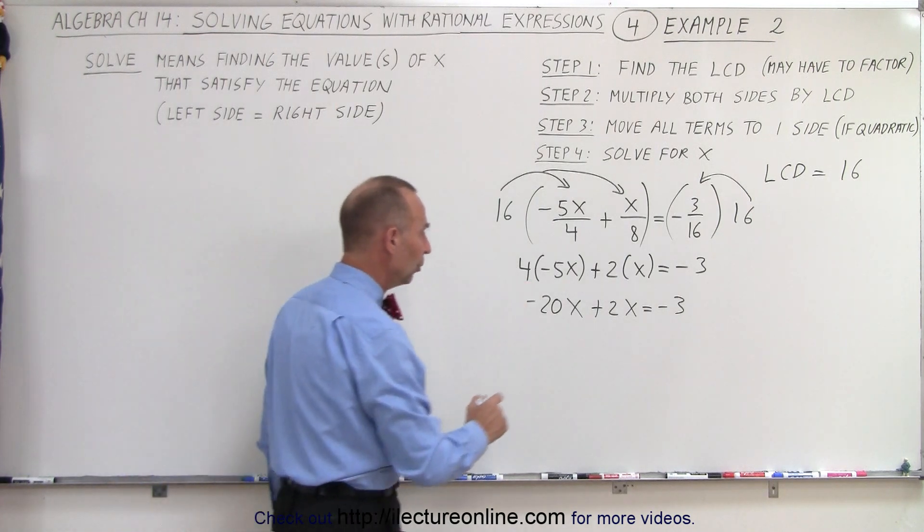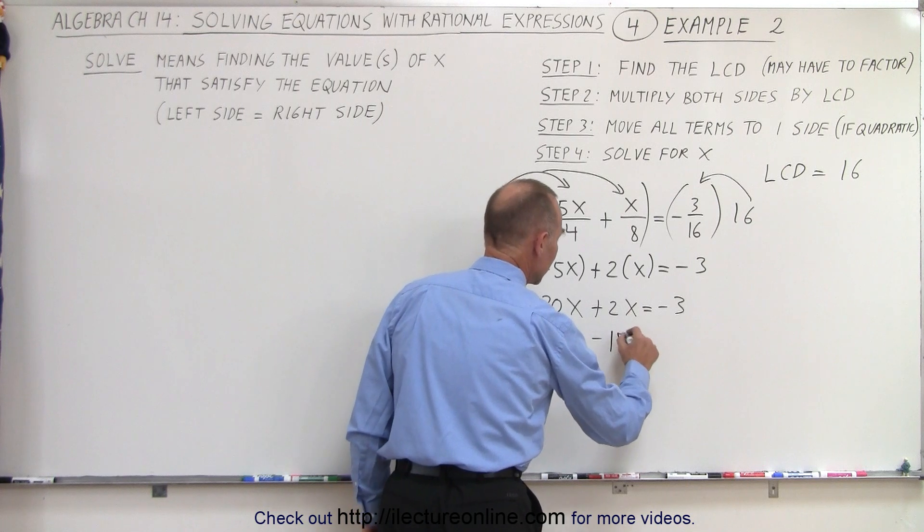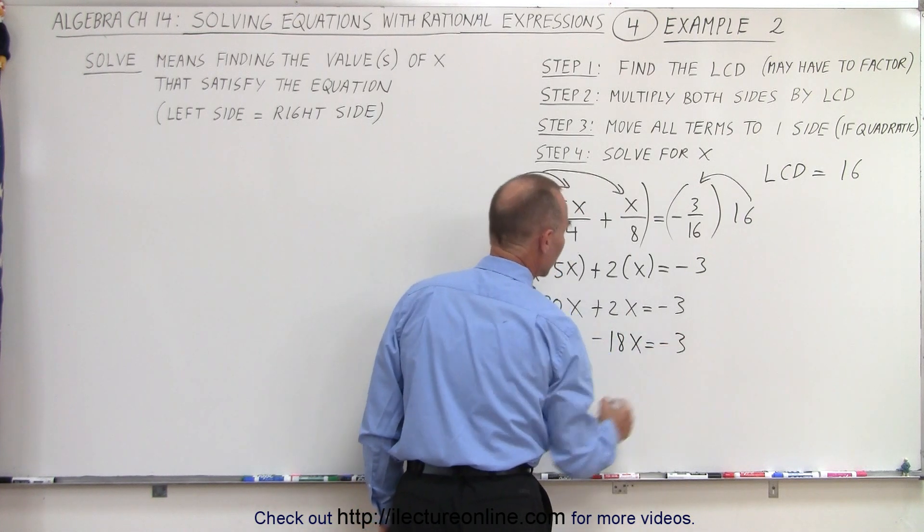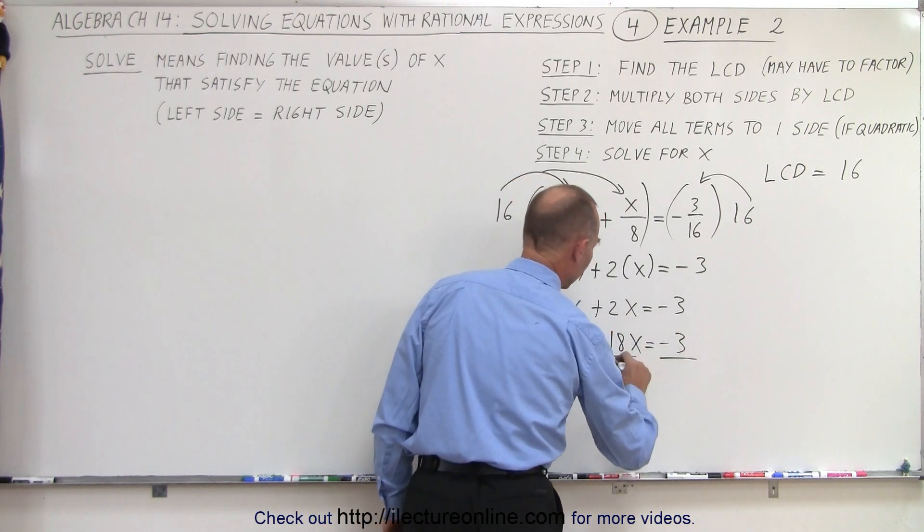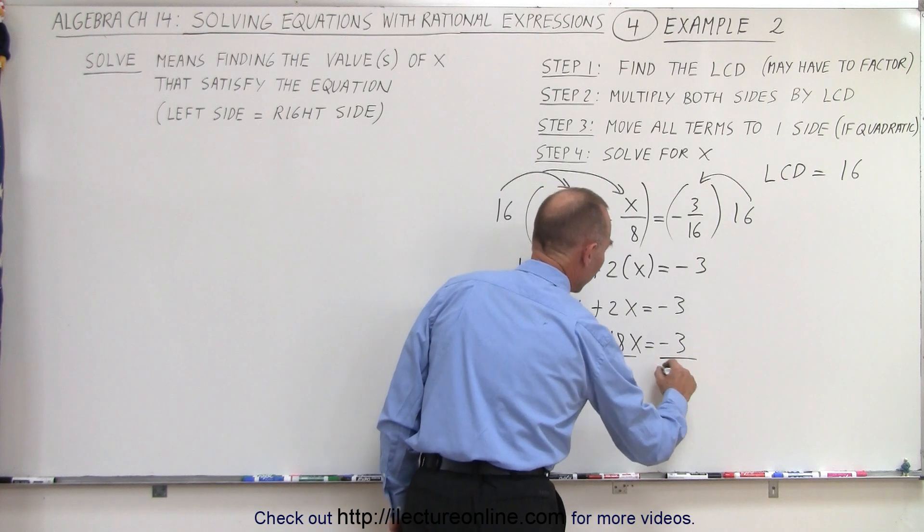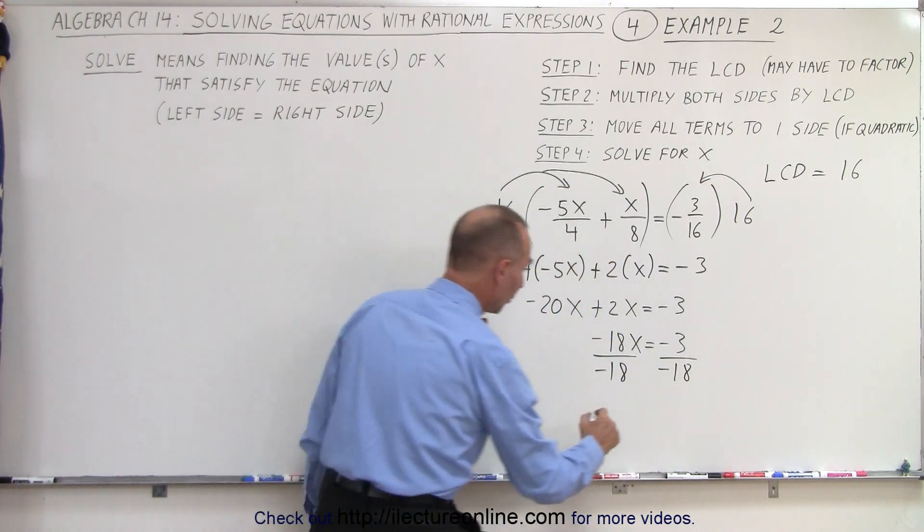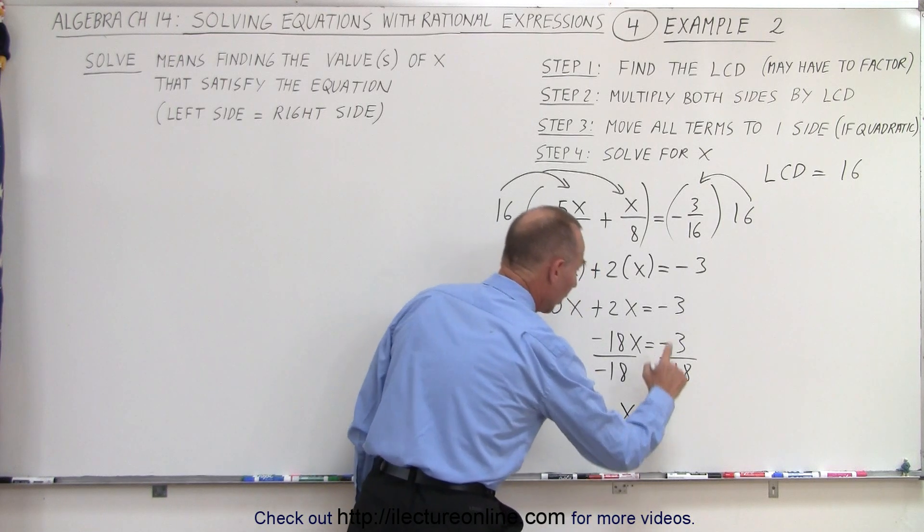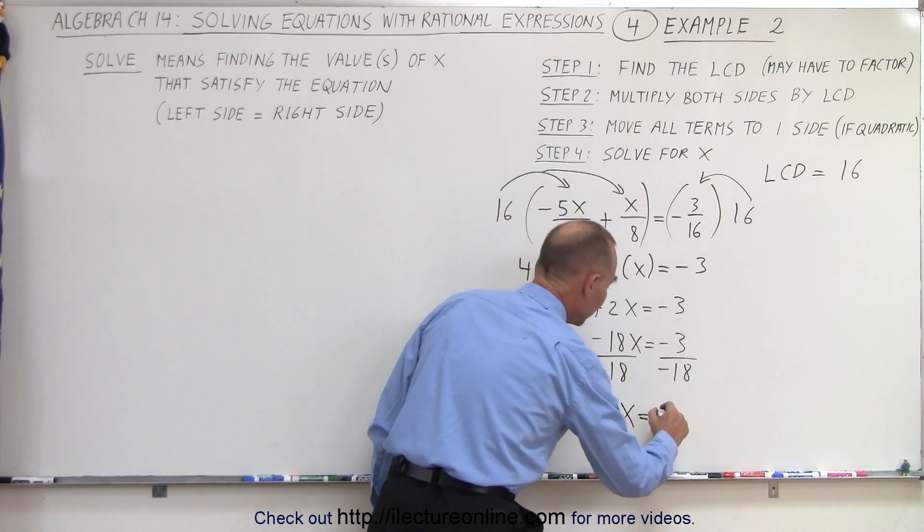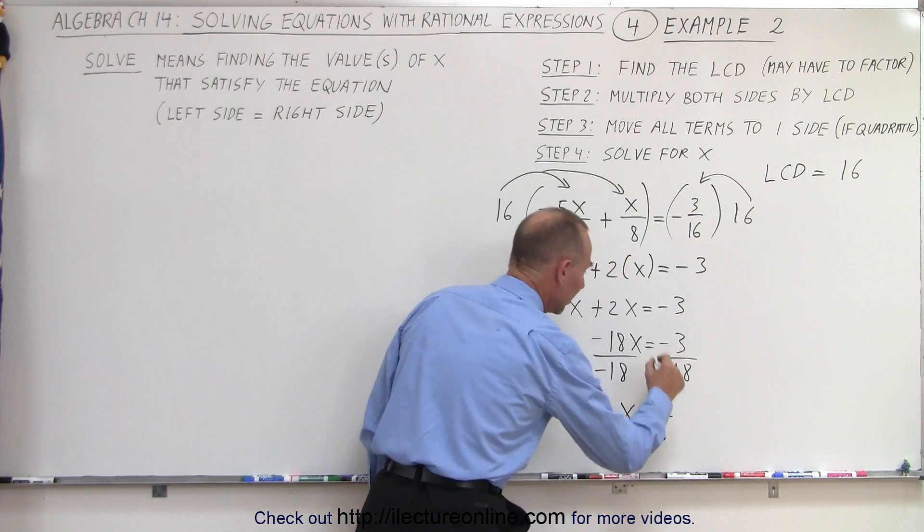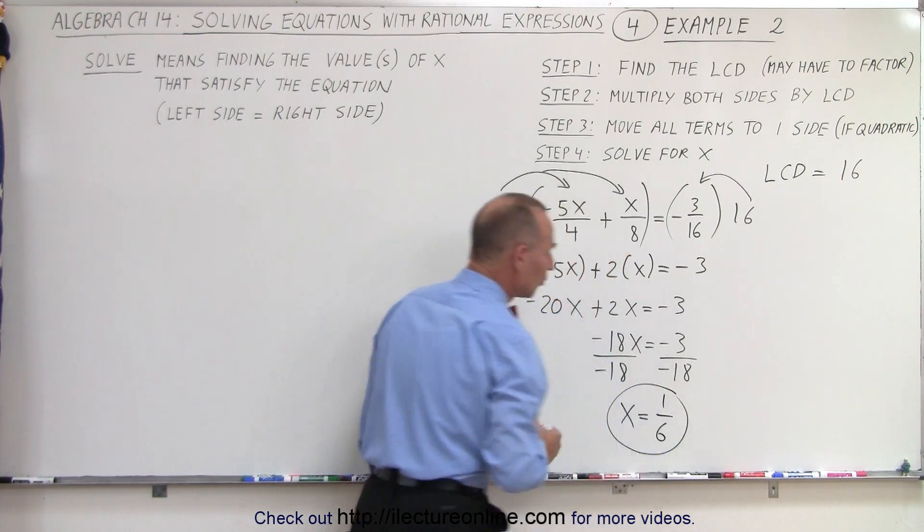Now we combine like terms, get minus 18x equals minus 3, and then we divide both sides of the equation by the numerical coefficient in front of the x. On the left side, we end up with x equal, on the right side, 3 divided by 18 becomes 1 over 6. The negatives cancel out, and there's our answer.